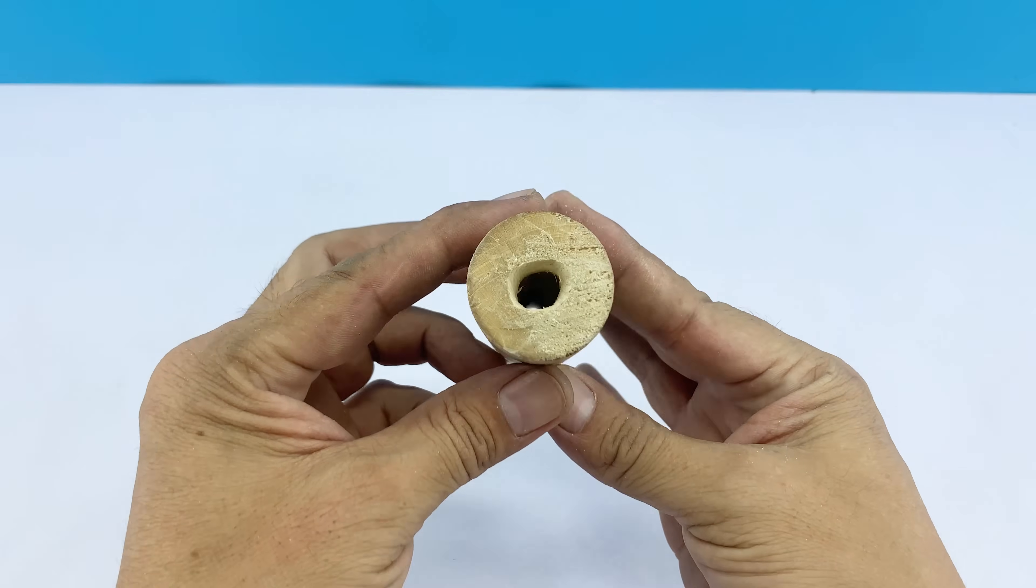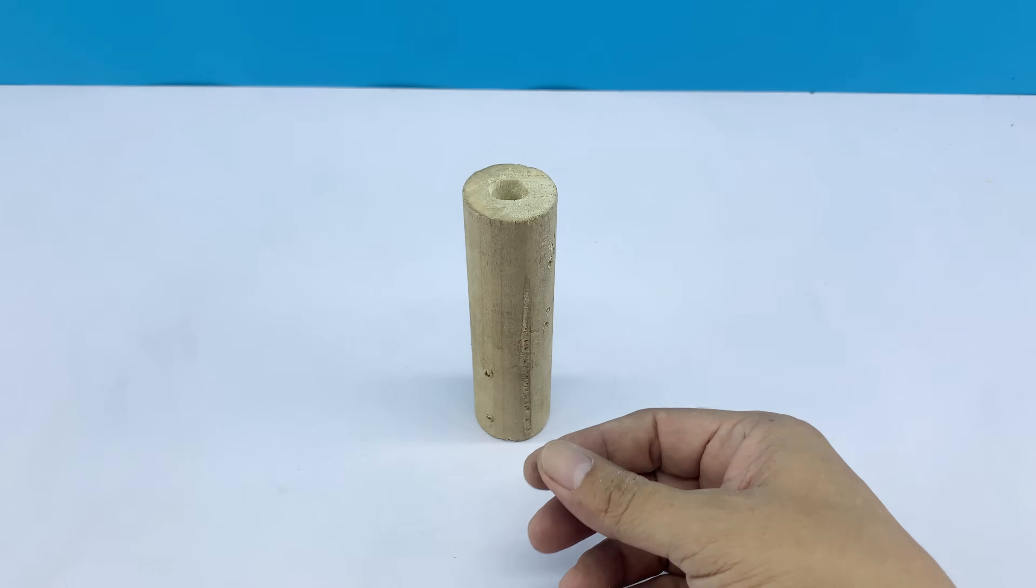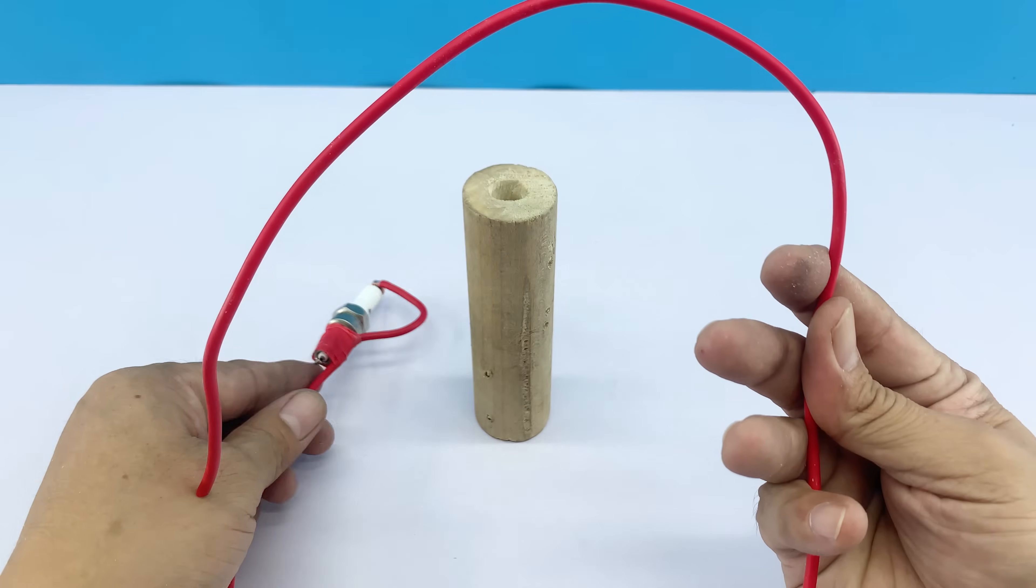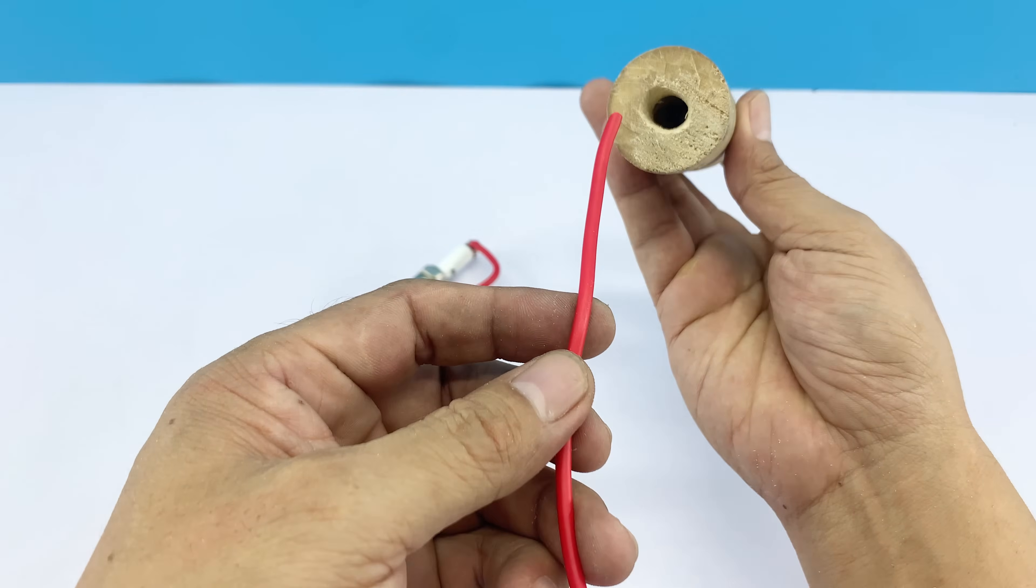If you're not confident on the first try, stop drilling, test whether the spark plug's threads fit, and then continue drilling little by little until the hole in the handle can securely hold the spark plug.